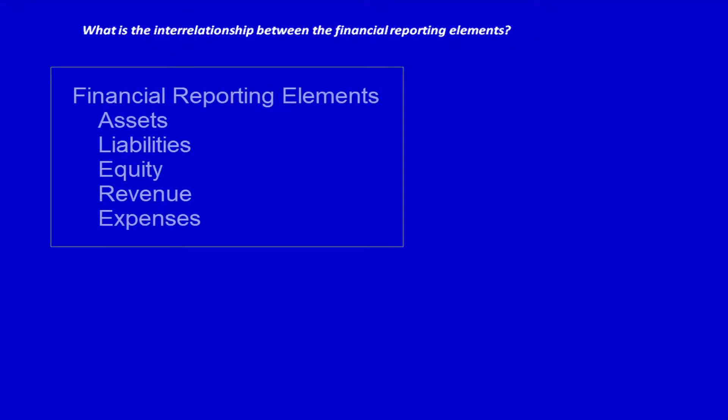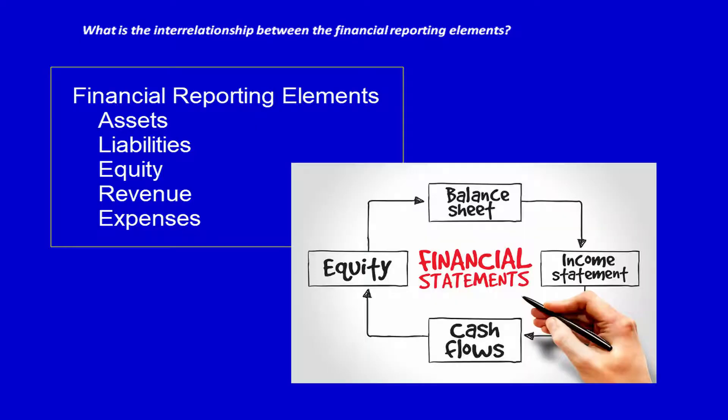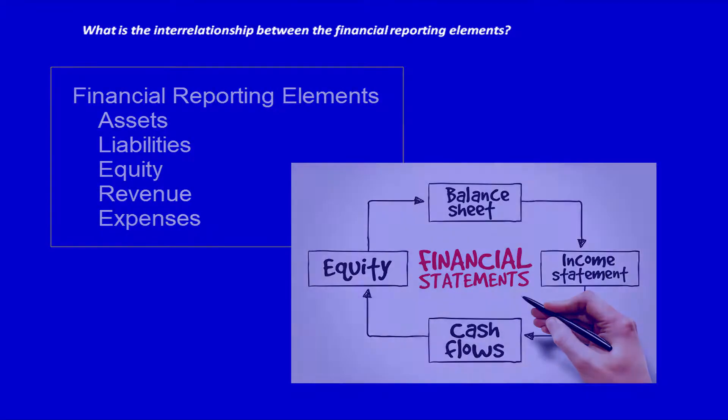What is the interrelationship between the financial reporting elements? Now that you have an understanding of the definition of the financial reporting elements — assets, liabilities, equity, revenue, and expenses — we can look at the relationship between the elements. Remember that the elements are used by the accounting system to group financial data so that it can eventually produce financial information in the form of financial statements.